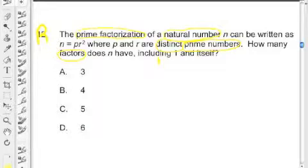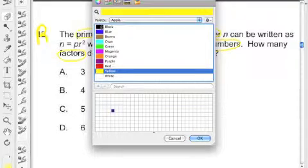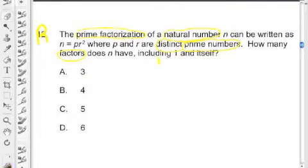The prime factorization of a positive whole number can be written as n equals pr squared. So I could think of this as some natural number is equal to p times r squared. And p and r are distinct primes. Well, we talked about what a prime number is, but what the heck is a distinct prime number?